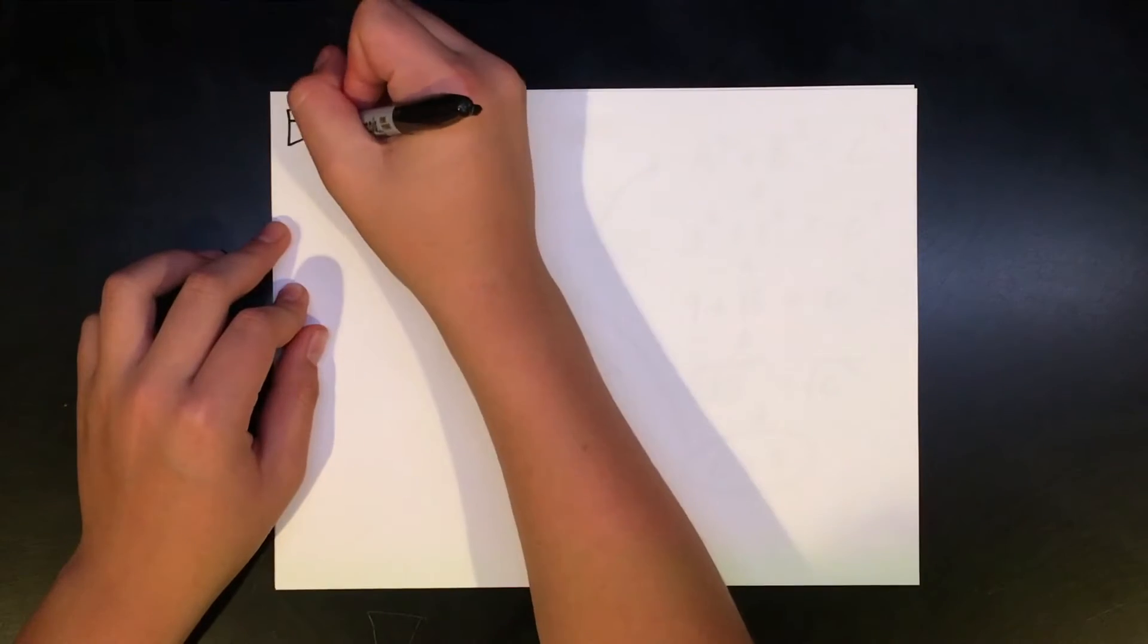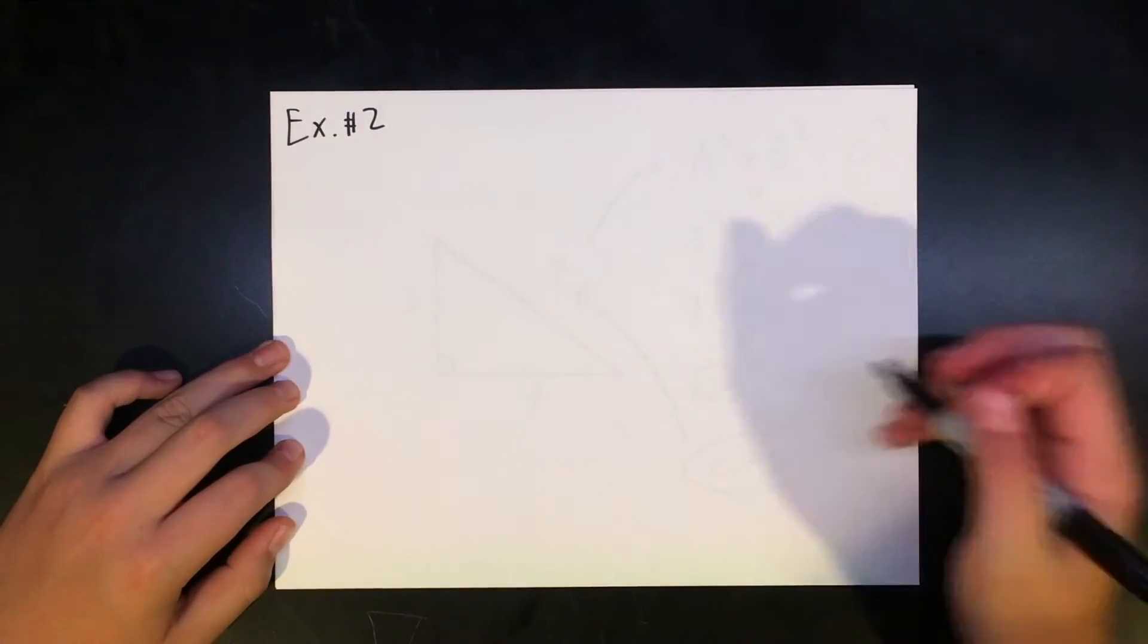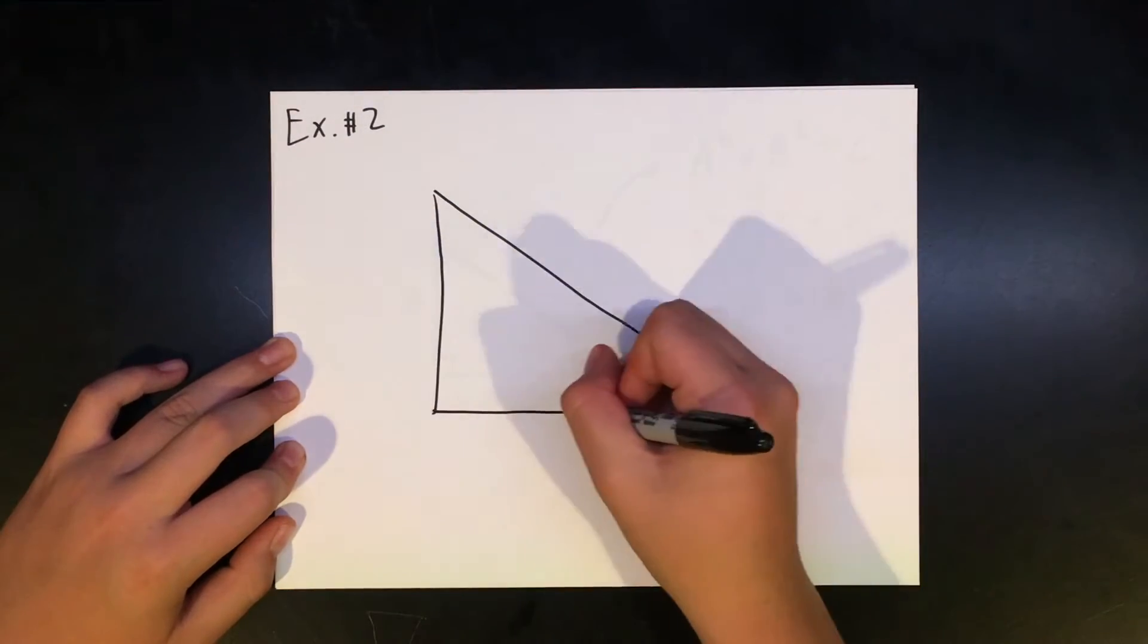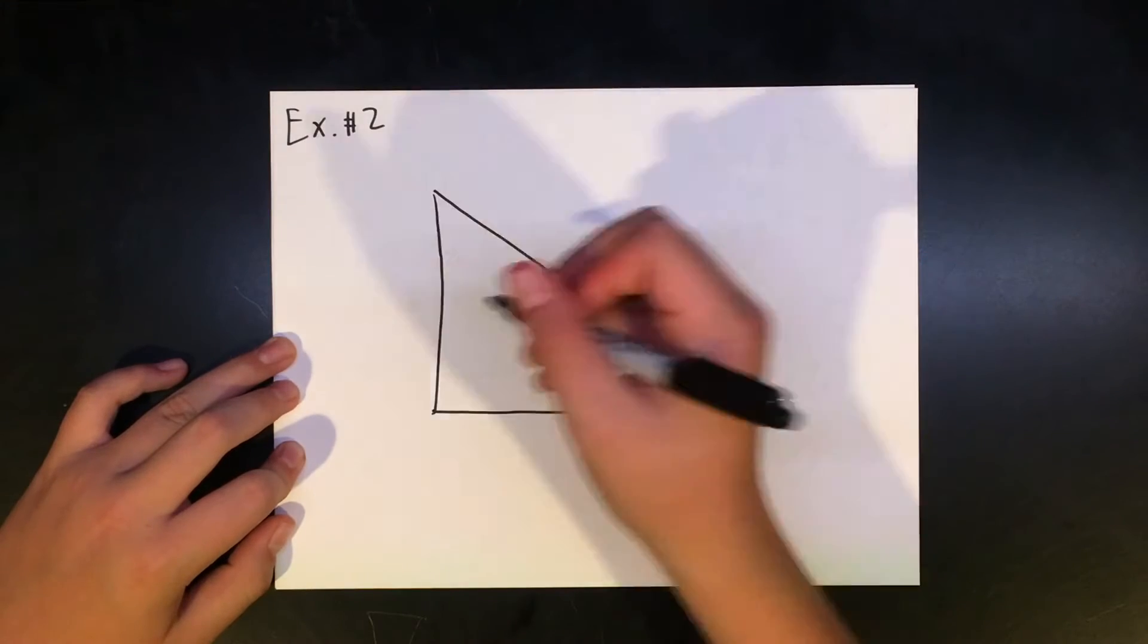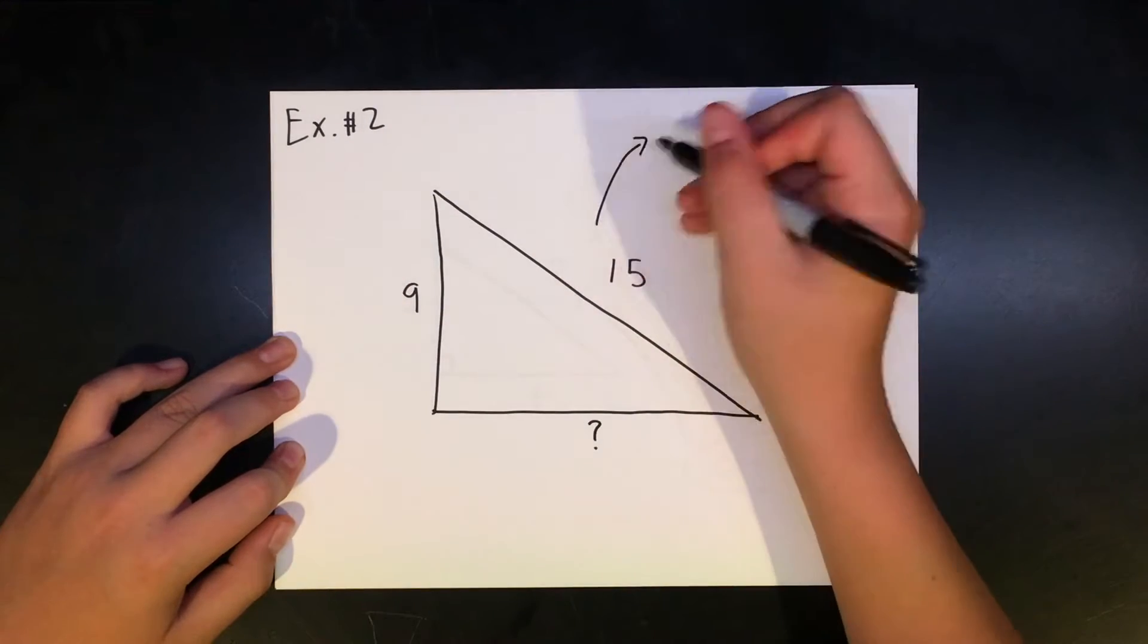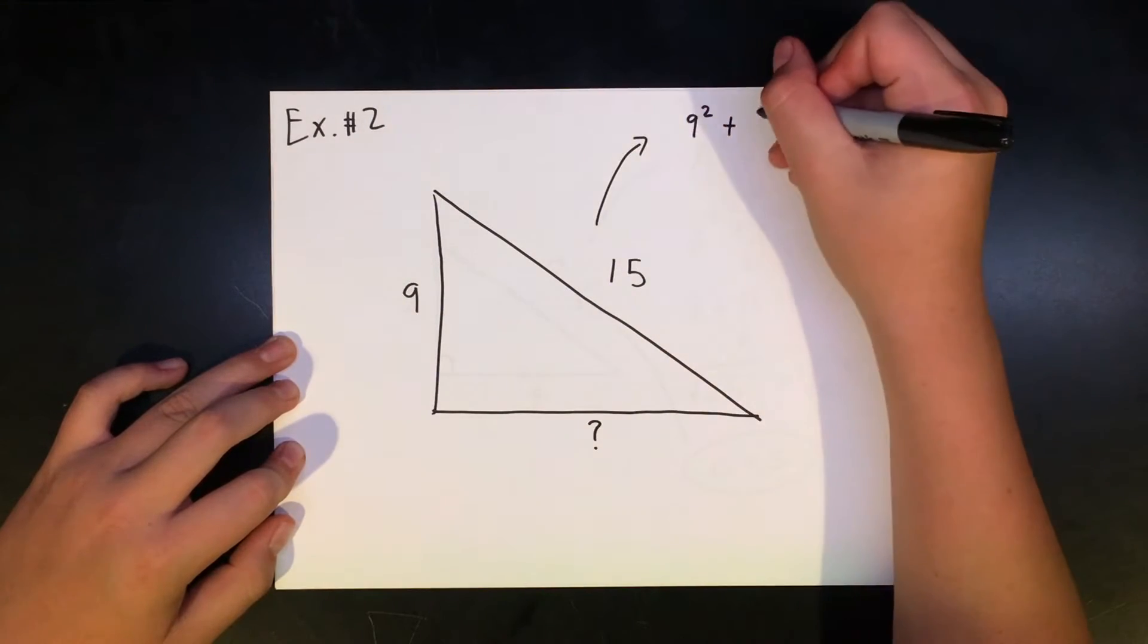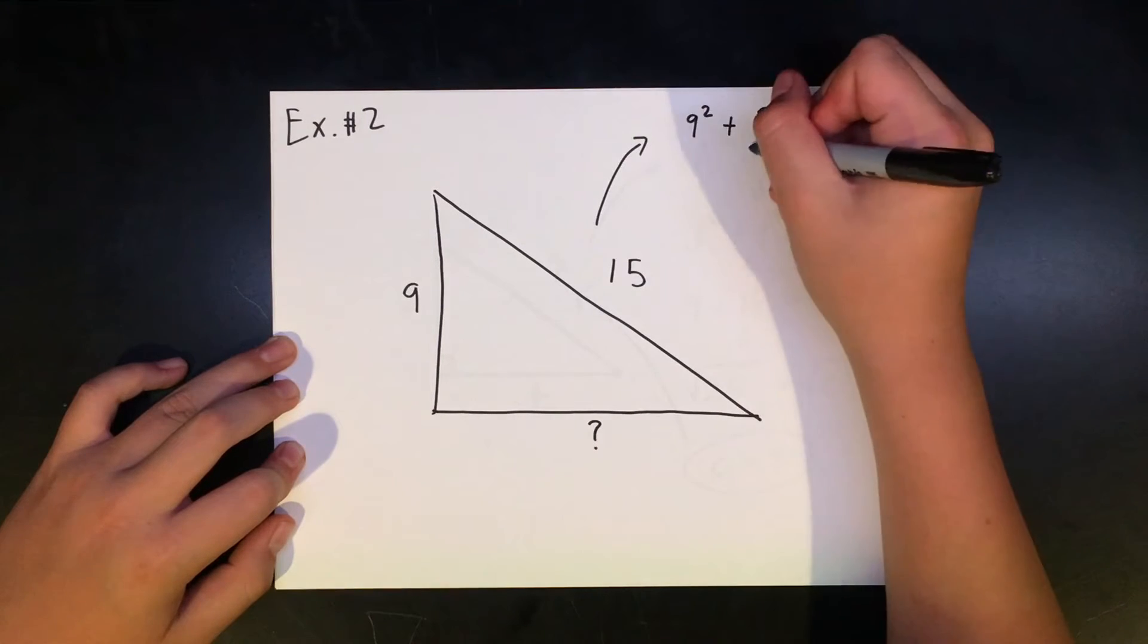There is another way to use this formula when the length of the hypotenuse is given. Let's say there is a triangle and the hypotenuse is 15 and one of the leg lengths is 9. This can be used by writing the equation 9 squared plus b squared equals 15 squared.